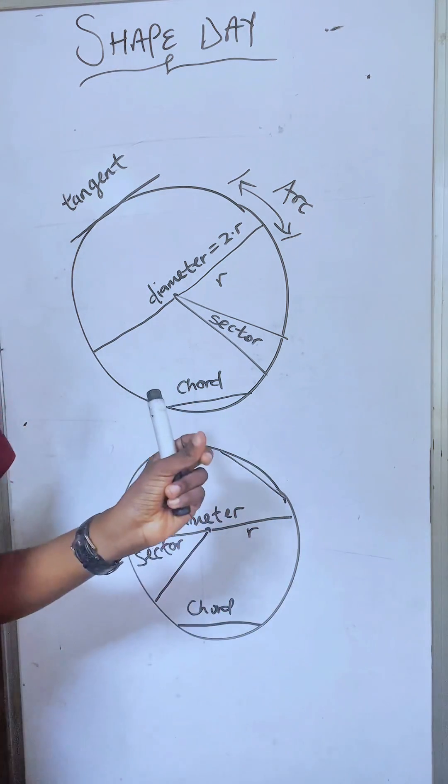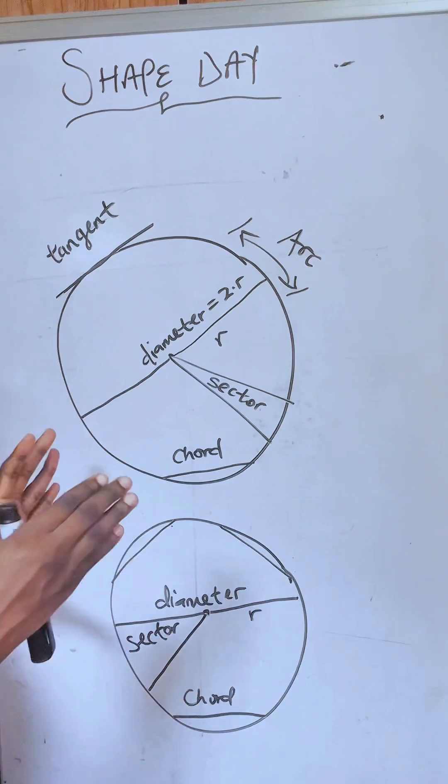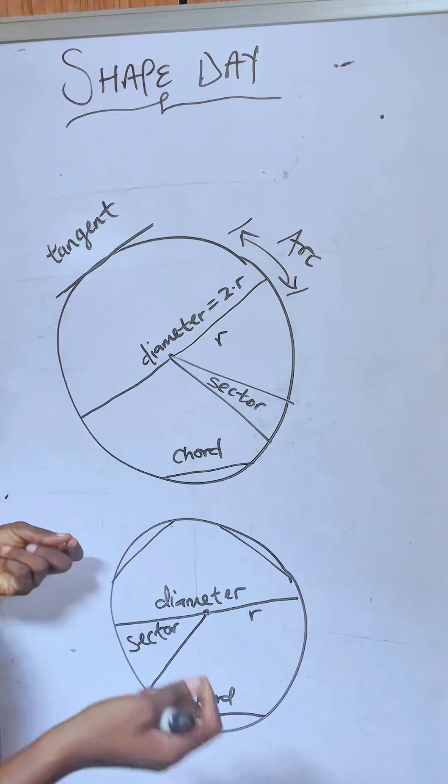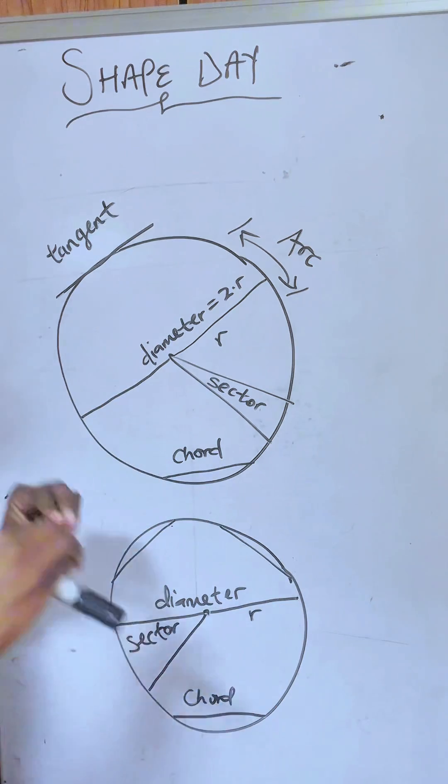So you see that circles have so much to give to you. If you are able to tell the parts of a circle, you should be able to solve anything about a circle.